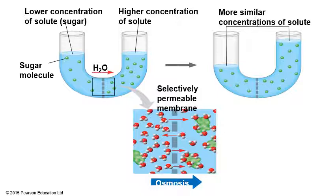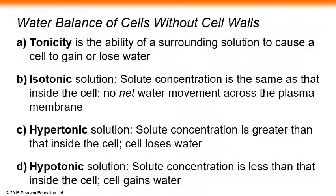When discussing osmosis, we often talk about tonicity. Tonicity is the ability of a surrounding solution to cause a cell to gain or lose water. An isotonic solution has the same concentration as that inside the cell, so there is no net water movement across the plasma membrane.